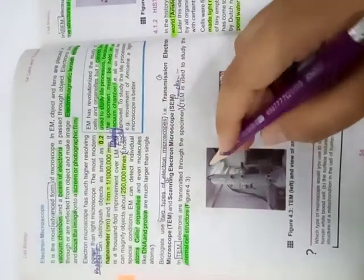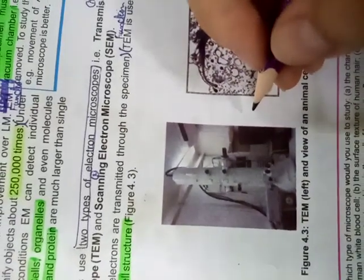So this is your page number 54 and this is the topic of electron microscope. As you can see, this is a picture of electron microscope. I will send you the picture of this electron microscope as a separate picture, but in your book page number 54 contains also the picture of electron microscope.